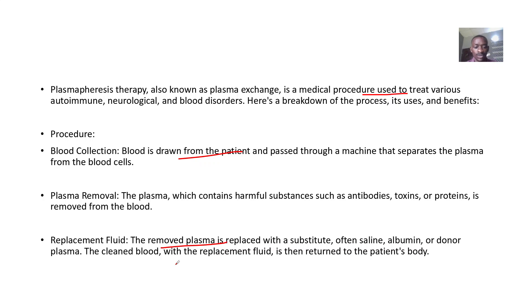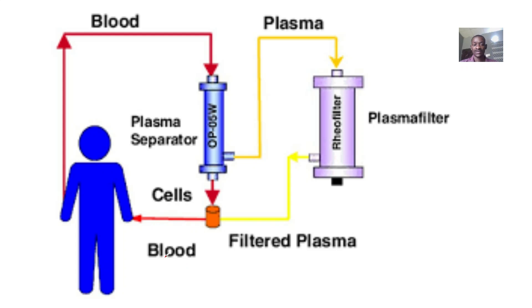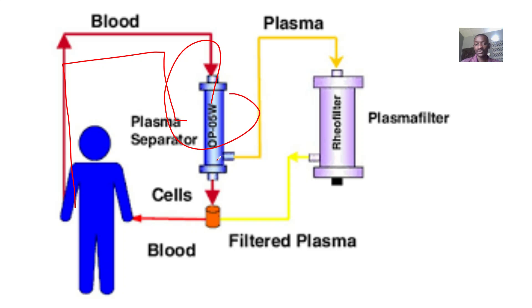You remove the toxins, and the clean blood with the replaced fluid is then returned to the body of the patient. So you collect the blood, pass it through a plasma separator, add the replacement fluid, and return it back to the patient.